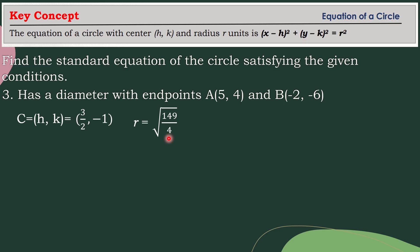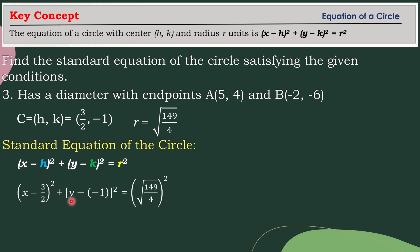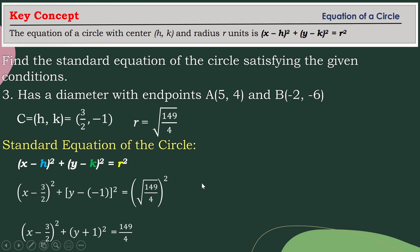We can now proceed to the standard equation by substituting the values of h, k, and r. Therefore, this becomes: the quantity of x minus h, which is 3 halves, squared, plus the quantity of y minus k, which is negative 1, squared, equals the square root of 149 over 4 as your r value, and then squared. Simplifying: the quantity of x minus 3 halves squared plus the quantity of y plus 1 squared equals 149 over 4, because the square root and the squared cancel each other out. That is the standard equation of the circle.